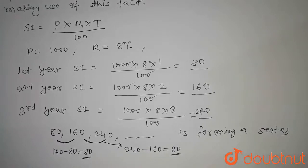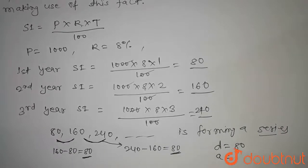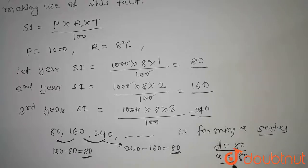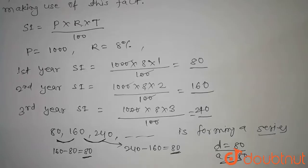Hence, this is proved that this series is forming an AP, and the common difference of this series will be d equal to 80, and the first term will be 80. Now by using this AP, we have to find the interest at the end of 30 years.